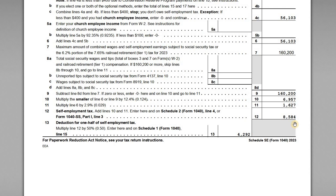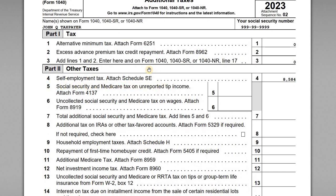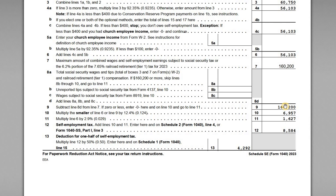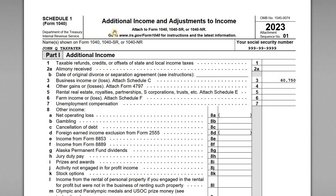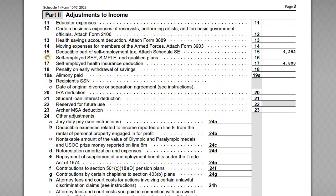This $8,584 is the total amount of tax to pay before accounting for any deductible credit. We enter this value on Schedule 2, line 4 — additional taxes — where our self-employment tax from Schedule SE is $8,584. Because you're self-employed you're paying both the employer and employee portion of these taxes, so you're allowed a deduction for one half of that SE tax. On line 13, we multiply line 12 by 50%, giving us $4,292. We enter that on Schedule 1, line 15.